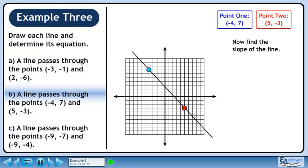Now find the slope of the line. Use the slope formula. Plug in the values from each point. This gives us minus 10 over 9.